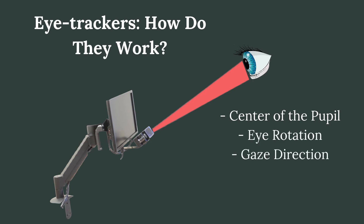So, in simple terms, eye trackers are essentially camera devices that use infrared light to record every eye movement. Eye trackers don't only measure eye movements and positions — they can also measure pupil size.